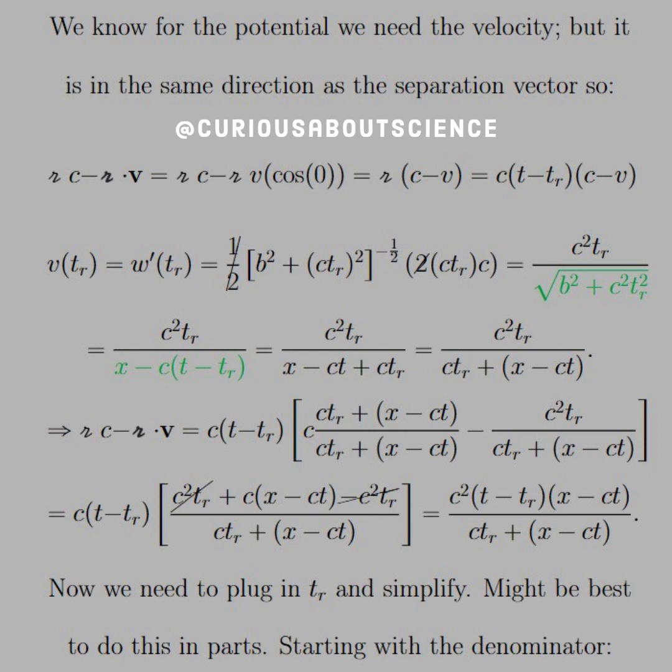So with that, then we rejoin everything in terms of X minus CT. And now we see here that if we want what's in the denominator for the potential, i.e. the script R·C minus script R dot V, well, the C times T minus T_R is fine. Now we have the C minus V term that needs to be dealt with. And in order to simplify the term in the bracket, we need to have a common denominator. Hence, C gets multiplied by 1 in the common denominator form. Now you see that we have a C squared T_R term that cancels, and we're left with C squared(T minus T_R)(X minus CT) all over CT_R plus X minus CT. What a gigantic mess thus far.